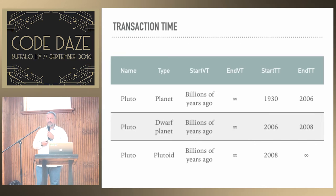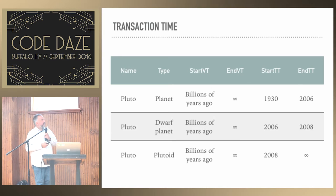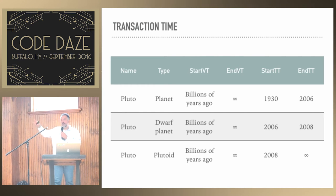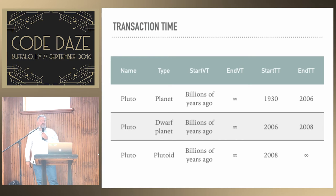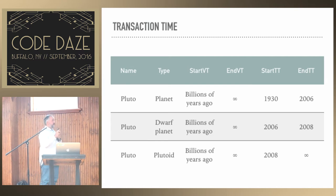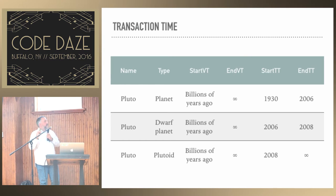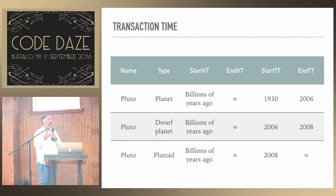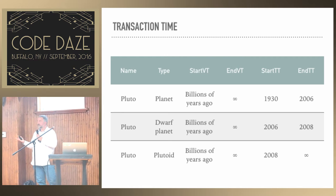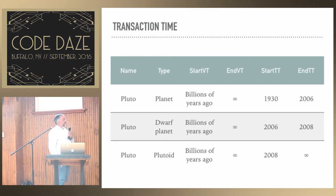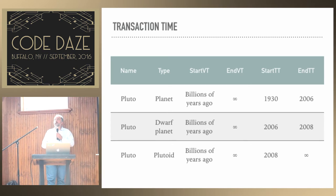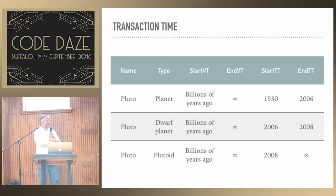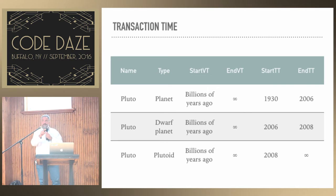Let's look at Pluto again, this time modeling both valid time and transaction time. We end up with three rows. Pluto was discovered in 1930. Its valid time starts billions of years ago — that doesn't change across our evolution of this fact. Transaction time says we believed Pluto was a planet from 1930 until 2006. In 2006 our understanding changes — we now believe it's a dwarf planet — and we believed that until 2008. The third row is what we currently believe, with no ending point in transaction time. Now I can ask: in the year 1400, what was Pluto? And in 1931, what did I believe Pluto was? A planet. That's the difference between valid time and transaction time.